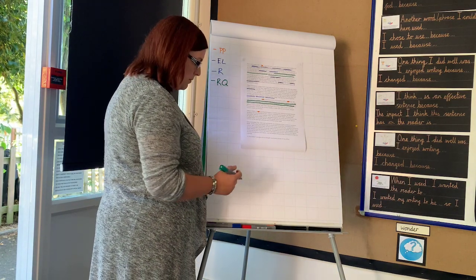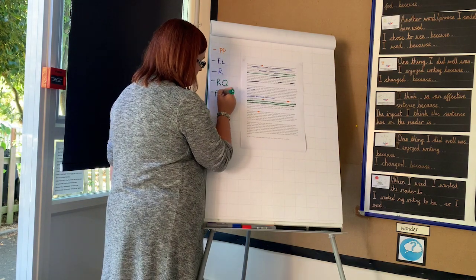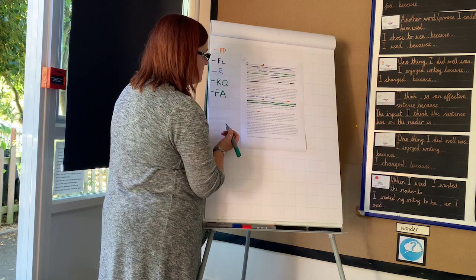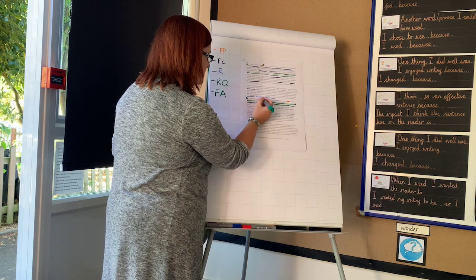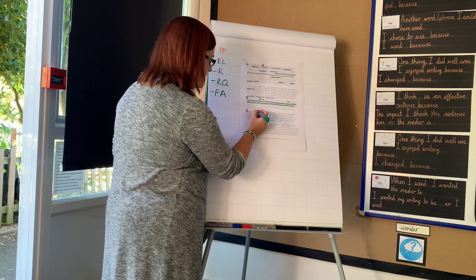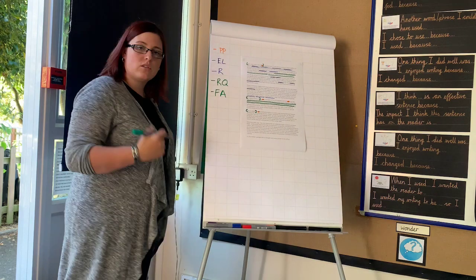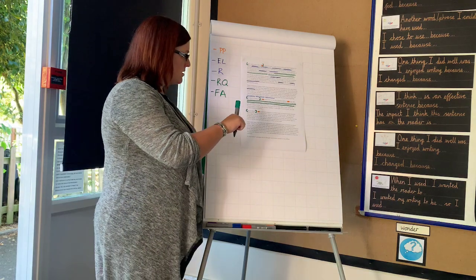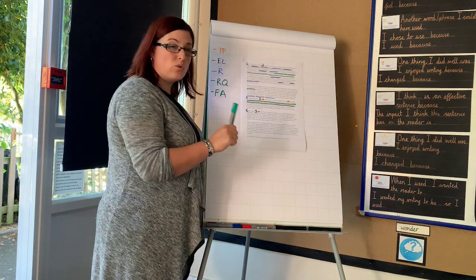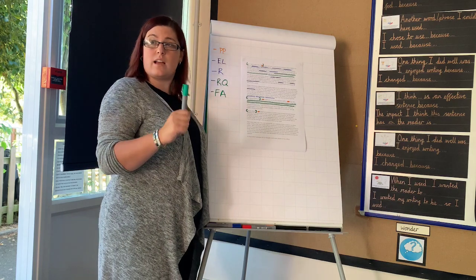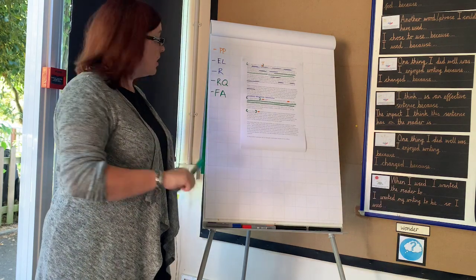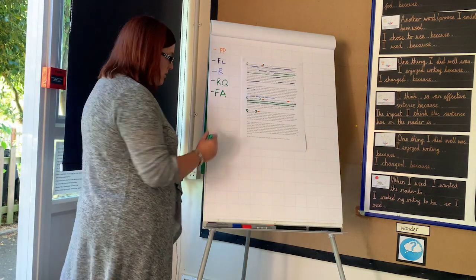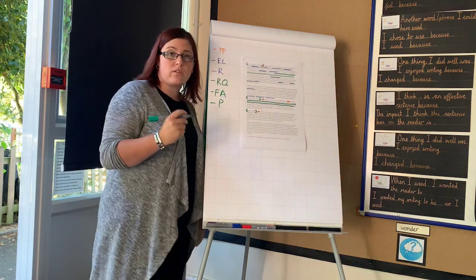There are also other things we can include and think about, such as fronted adverbials — 'each and every one of us', 'my fellow Americans', 'fellow citizens' — we've got those fronted adverbials in there. There's also the occasional short sentence just for dramatic effect, and we might use a dash for a pause. The use of punctuation is also another feature to look at.